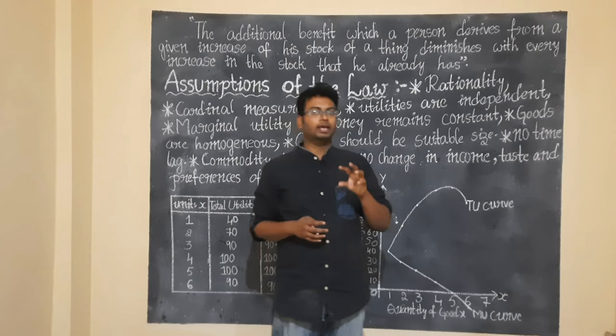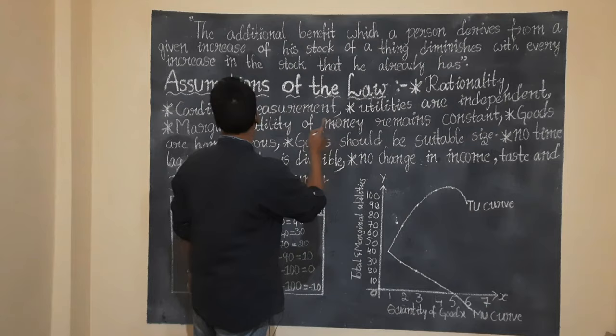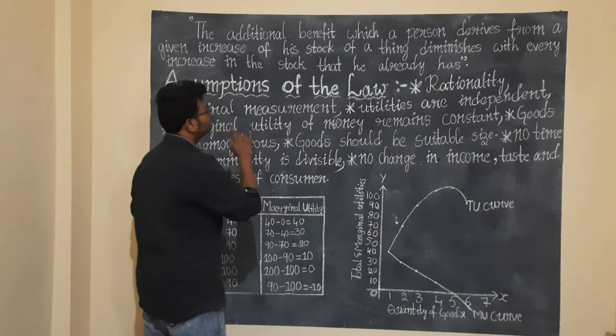Alfred Marshall's Law of DMU: 'The additional benefit which a person derives from a given increase of his stock of a thing diminishes with every increase in the stock that he already has.'